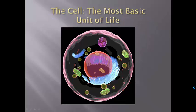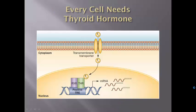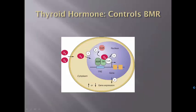Our bodies are composed of cells — we are basically a giant walking, talking bag of cells. Every single cell in your body needs some basic things to make it operate normally: all the cells need oxygen, they all need nutrition, and they all need thyroid hormone in order to work correctly. Thyroid hormone controls a couple of different things in the body. It enters the cell through the cell wall, goes right to the nucleus, and energizes the cell. This happens with every one of the approximately 75 trillion cells in your body.